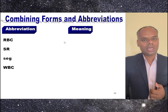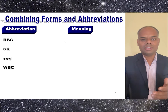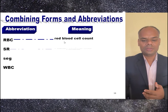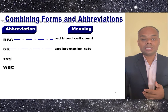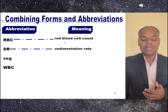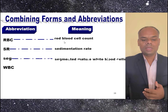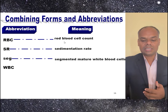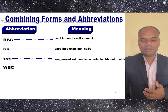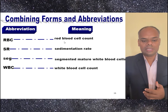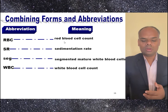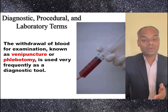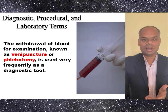RBC is red blood cell count. SR is sedimentation rate. SEG is segmented mature WBC cells. WBC is white blood cell count.